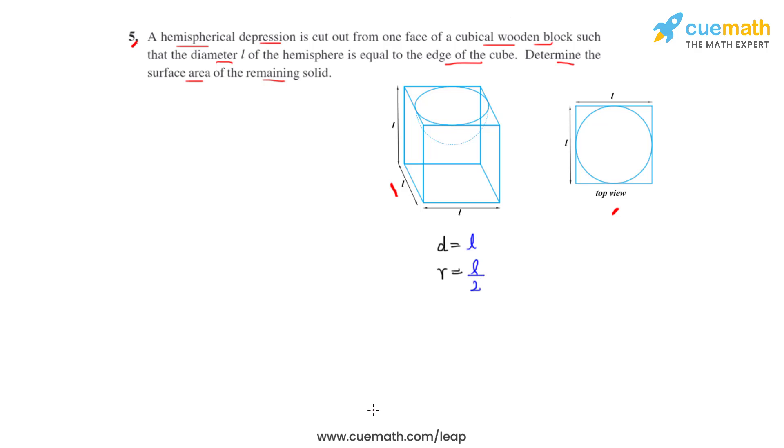Now if we clearly observe the given figure, it's clear that the surface area of the remaining solid includes total surface area of the cubical block, the curved surface area of the hemisphere, and excludes the scooped out part.